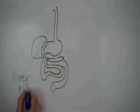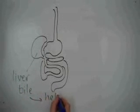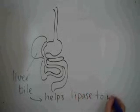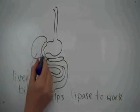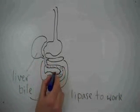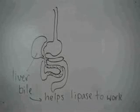Oh, this is an interesting organ. This is your liver. It makes a substance called bile. Bile is not actually an enzyme, but it does help the lipase to do its job. And there again it works in the small intestine. We're done.